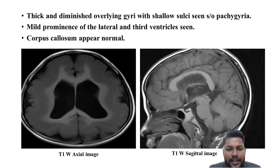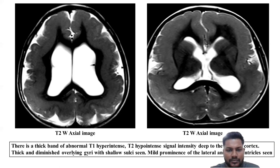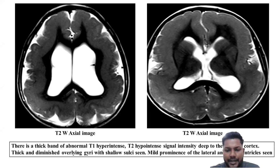There is also a thickened, diminished overlying gyria with shallow sulci. As we can see, this is a T1 weighted axial image and T1 weighted sagittal image; corpus callosum appears normal. This is a T2 weighted axial image and another T2 weighted axial image. There is also a thick band of abnormal T1 hyperintense and T2 hyperintense signal deep to the cortex. Thick and diminished overlying gyria with shallow sulci are seen. Microminoes of the lateral ventricle are seen.